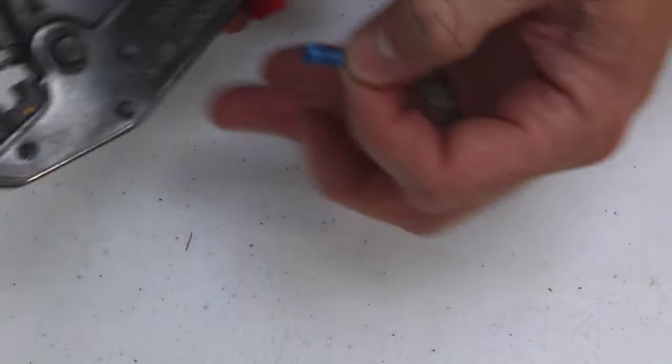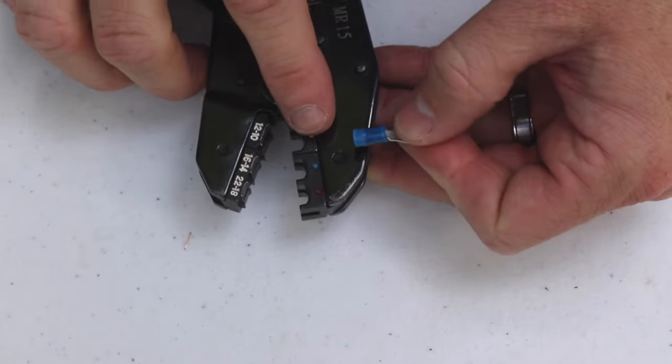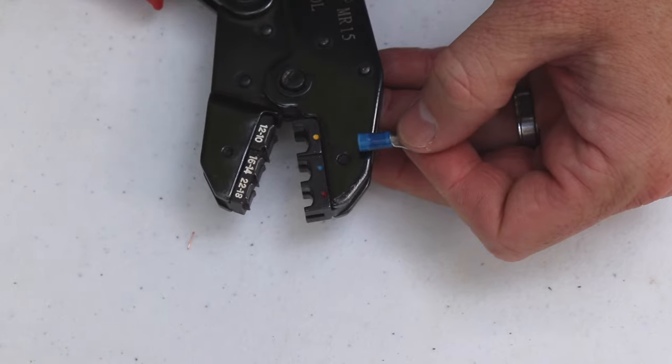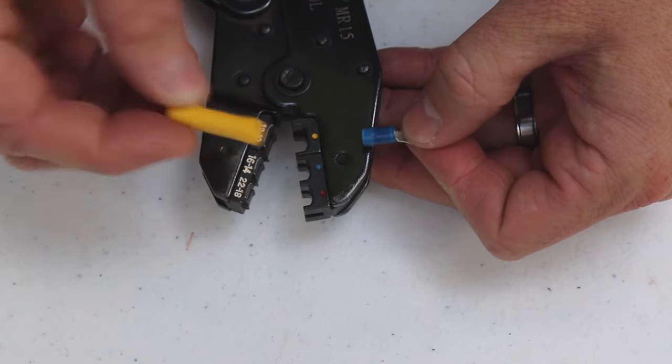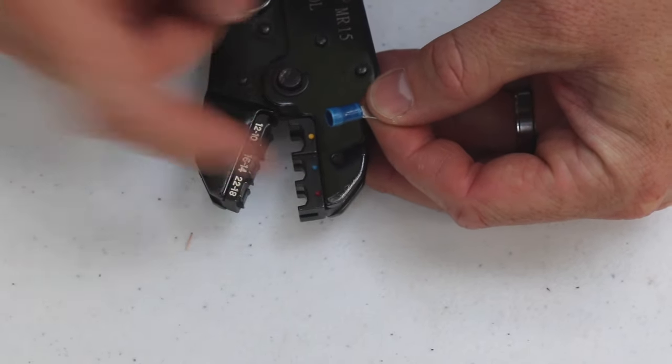Next you want to grab your pair of crimpers. These crimpers are all color-coded so if you have a yellow terminal you're going to use it on the yellow one. Blue terminal you're going to use on the blue one, or red is going to go in the red.